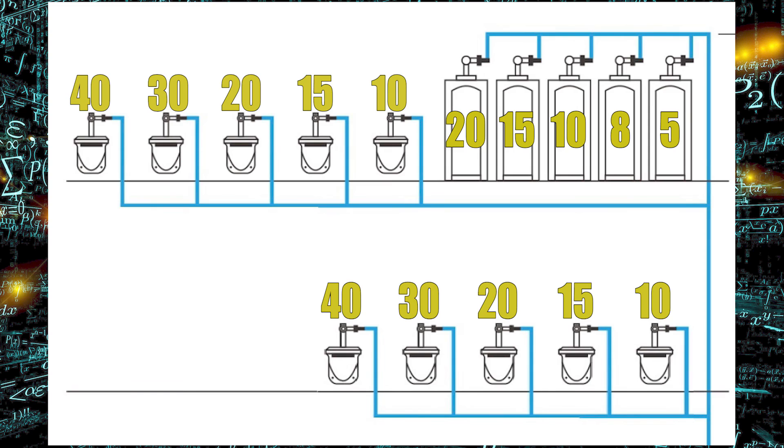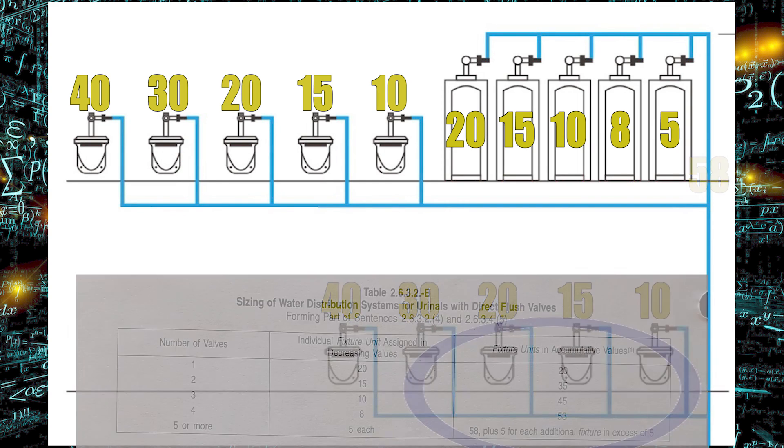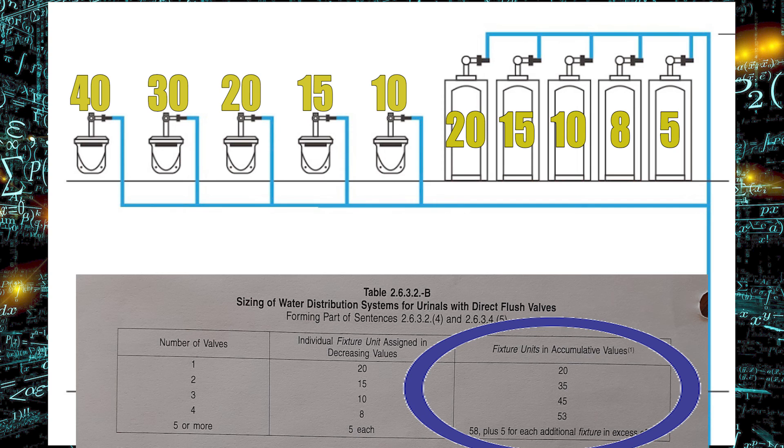Now let's look at the fixture units between the urinals. So between urinals two and three there, we're only supplying the first two, we are at 35 fixture units. I move over to the right, there is 45 fixture units right here, and between here is 53 fixture units, and then the pipe that drops right down through the bottom of the floor, 58 fixture units. Notice how I just read the fixture unit load that is in the right-hand most column in table 2632B. That's what those numbers are there for.